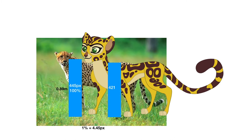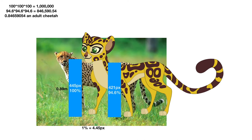Fulee's height in the image was 421 pixels, or 94.9% of the adult cheetah. Cubing 94.6 gives 0.84659054, meaning Fulee is 0.84659054 of an adult cheetah's mass. A large adult cheetah is 72 kilograms, so multiplying 72 by 0.84659054 gives Fulee a weight of 61 kilograms.